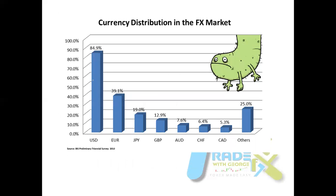This picture shows the distribution of currencies in the financial market. We can see that the United States Dollar has the highest trading volume — USD at 84.9%, Euro at 81.9%, followed by JPY and GBP. These are their volumes and levels of participation. This confirms that these are the major currencies.